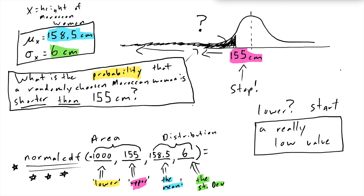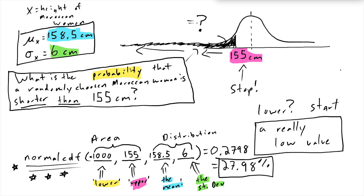Negative 1000 is certainly way smaller than I actually need to use, but by using a very small number I'm being cautious. When you're doing math, it's a good idea to err on the side of caution and be more precise rather than less. When I do this in my calculator, I get 0.2798, which is 27.98% — that's the area to the left of 155, which is the same as the probability that a randomly chosen Moroccan woman is shorter than 155 centimeters.